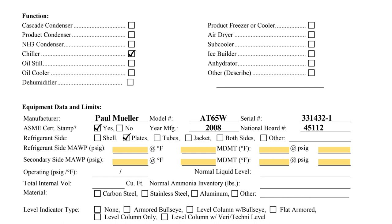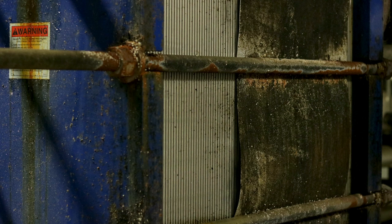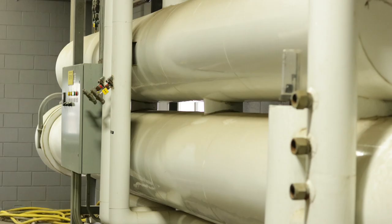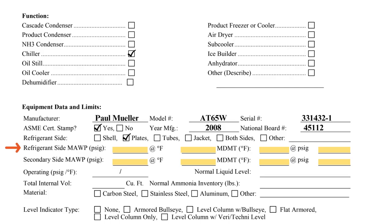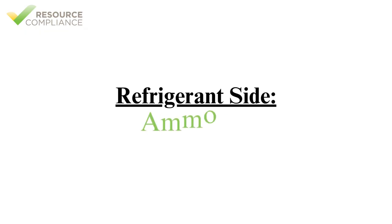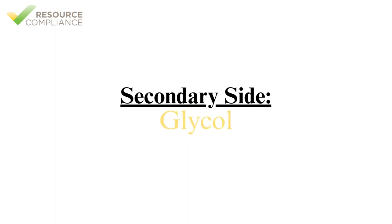The questions referring to refrigerant side, refrigerant side maximum allowable working pressure (MAWP), and secondary side MAWP are unique to the heat exchanger checklist. This is because the purpose of the heat exchanger is to transfer heat from one substance to another without direct contact of the substances. Therefore, one side of the heat exchanger pertains to the primary refrigerant, and the other side refers to the secondary substance being cooled. In this example, the refrigerant side will be ammonia, and the secondary side will be a glycol solution.